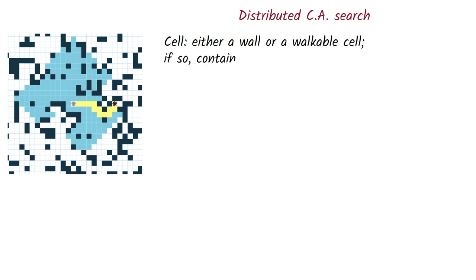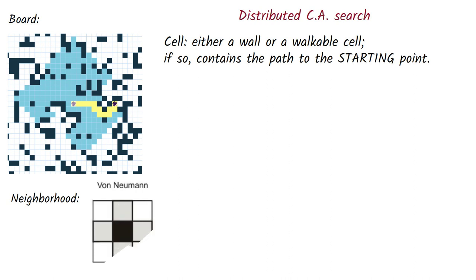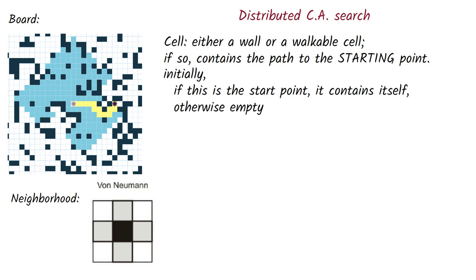As before, we must define the cell, the board, the neighborhood, and the rules. The cell is a point that can either be available to work on, or it can be a wall. If it is available, the cell's state will also include a path to the starting point. Note, this is not a mistake. To the starting point. After the pathfinding is done, we will get the path from the end to the start, and we will have to reverse it. The board will be a simple two-dimensional array of cells. And as for the neighborhood, we will use von Neumann's neighborhood, meaning that for each cell the neighbors are those above, below, left, and right, but not diagonally. At the beginning of the algorithm's operation, all cells have empty paths, except for the cell for the starting point, which has itself as its path.